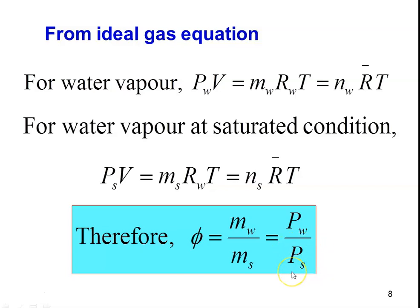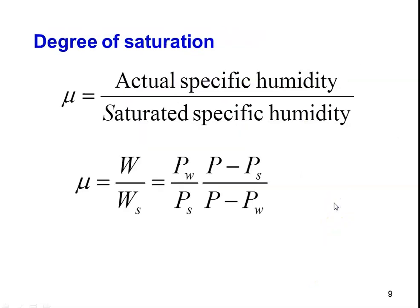So phi, relative humidity, equals Mw by MS, mass of water vapor divided by mass of water vapor at saturated condition, which also equals Pw by PS. Another property is degree of saturation mu, defined as actual specific humidity divided by saturated specific humidity: mu = W / Ws. Substituting for W and Ws, the equation becomes mu = (Pw/PS) × (P − PS) / (P − Pw).